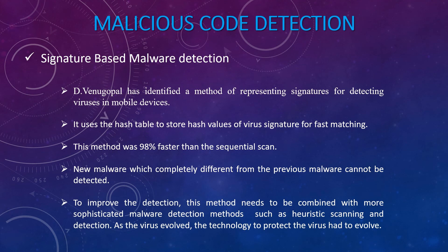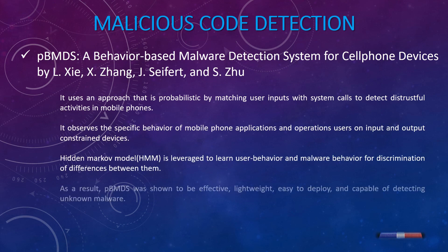A reviewed method identifies signatures for detecting viruses in mobile devices using a hash table to store hash values of virus signatures for fast matching. This method was 98% faster than sequential scan. However, new malware completely different from previous malware cannot be detected, so this method needs to be combined with more sophisticated techniques such as heuristic scanning. For behavioral-based malware detection, the system represents malware behavior and discovers the application's logical action order. Malicious behavior is distinguished from normal behavior by training an SVM, and the system is evaluated with an accuracy of 96% for both real-world and pseudo-mobile malware.